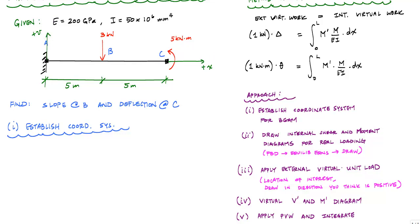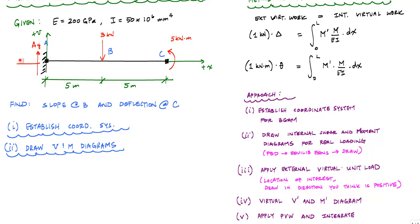The next thing I want to do is draw the internal shear and moment diagrams with the real loading. This involves drawing a free body diagram, using equilibrium equations, solving for reactions, and then drawing the shear and moment diagrams. That used to be a three or four step process in statics; now it's just a sub-step of this larger method of virtual work. So let me go ahead and draw the reactions at point A: a vertical reaction, a horizontal reaction A_x, and because of the fixed support, a concentrated moment reaction.